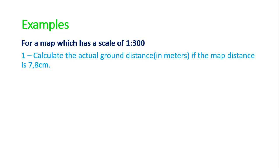First we write down the scale, 1 to 300. The first number represents the distance on the map and the second number is the actual distance in the real world or the ground distance. When they give us a map distance and we want the actual, we're going from left to right, which means we multiply. So we take 7.8 centimeters and times it by 300, which gives us 2340 centimeters.